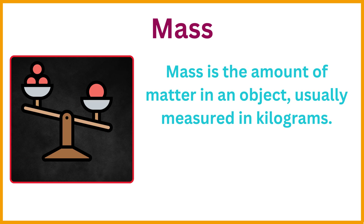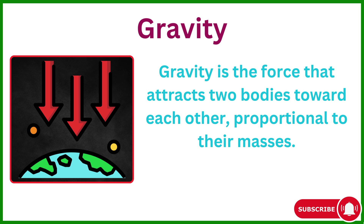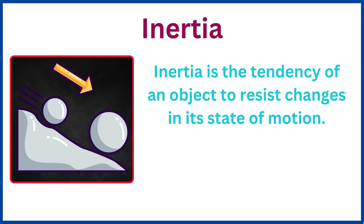Mass is the amount of matter in an object, usually measured in kilograms. Gravity is the force that attracts two bodies toward each other, proportional to their masses. Inertia is the tendency of an object to resist changes in its state of motion.